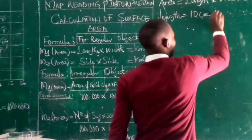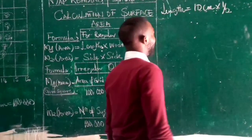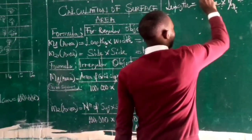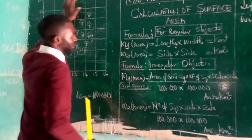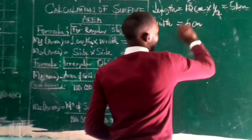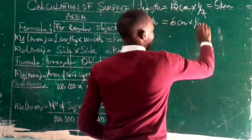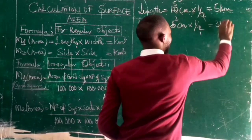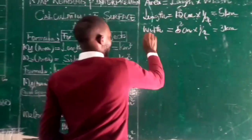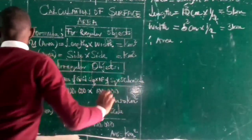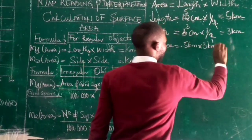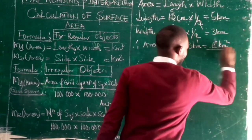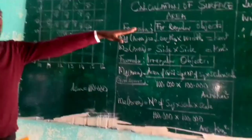We can simply multiply 10 cm times one-half, which gives us 5 km. That is our length: 5 kilometers. The same thing goes with the width — calculate the width too. Let's say the width is 6 cm; dividing by 2 gives us 3 km. Therefore, the total surface area equals 5 km times 3 km, which gives us 15 km². That is the first formula — very simple.